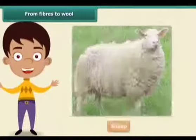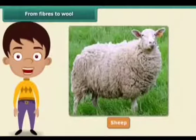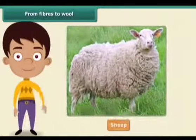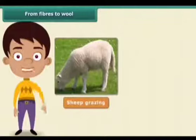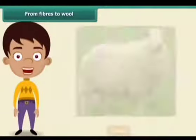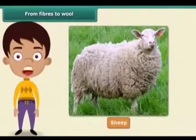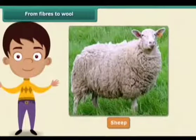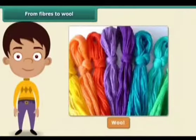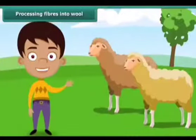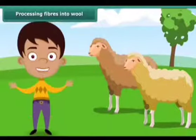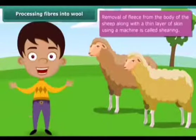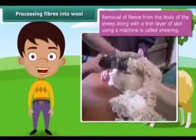For wool to be of good quality, sheep need to be fed a nutritious diet. Apart from what they get from grazing, they are fed a mixture of pulses, corn, and jowar. The sheep thereby develop a thick growth of hair. This hair is known as the fleece of the sheep and provides us wool.